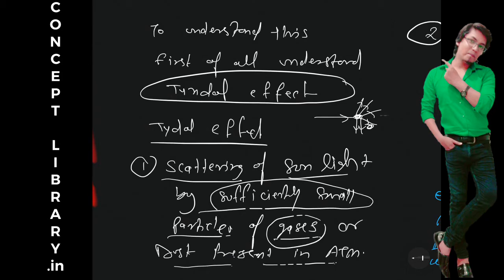In our atmosphere we have gases and dust particles. We have a size of a particle, a proper size, sufficiently small size. Only that particle which is having a particular kind of size will scatter the sunlight.